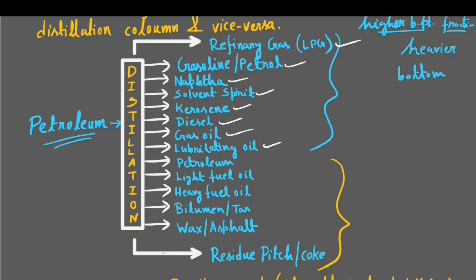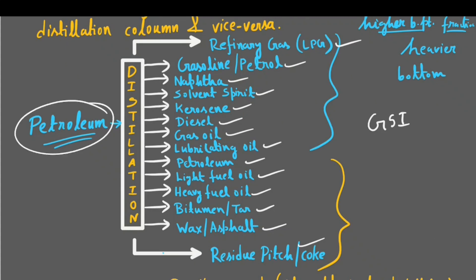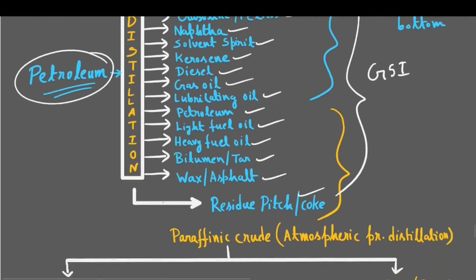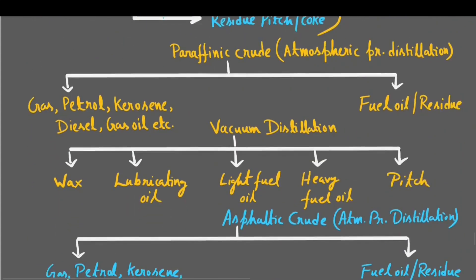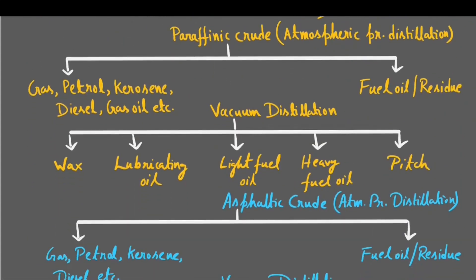The heavy fractions include lubricating oil, petroleum, light fuel oil, heavy fuel oil, bitumen or tar used for road making, asphalt, and residue pitch or coke. If in a GSI Mains exam you are asked to write about petroleum fractionation and constituents, don't use this chart — rather draw the diagram, which is more informative and easier for marks.